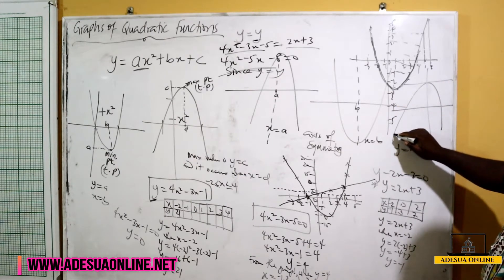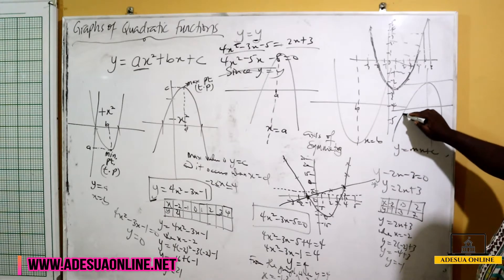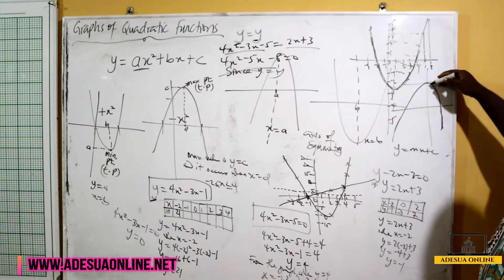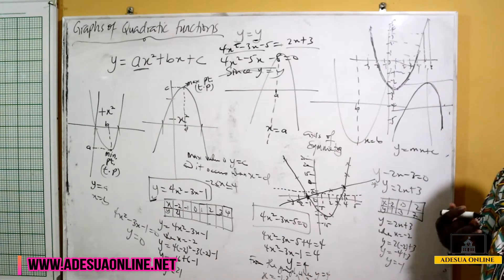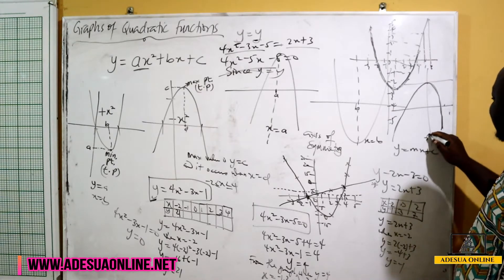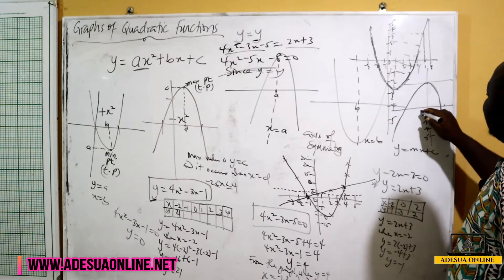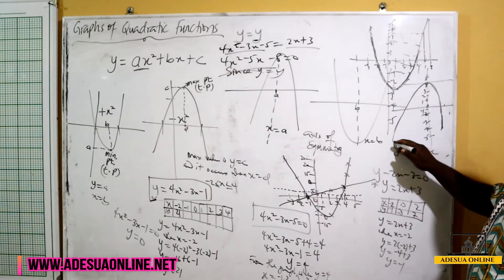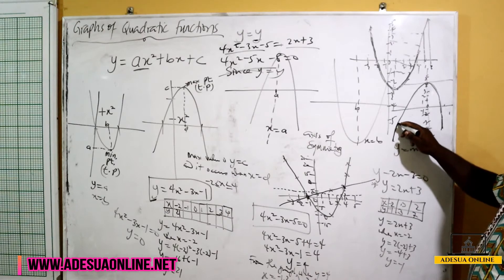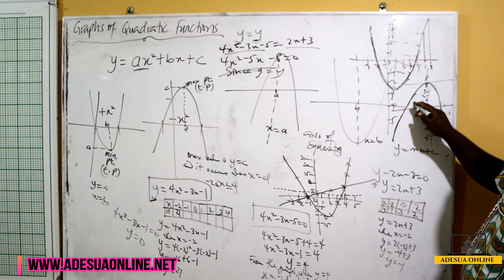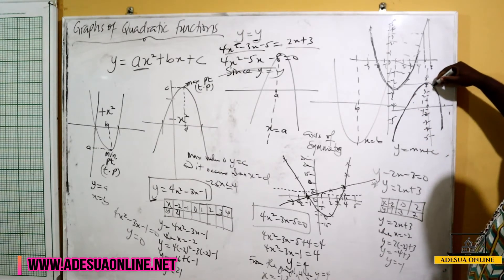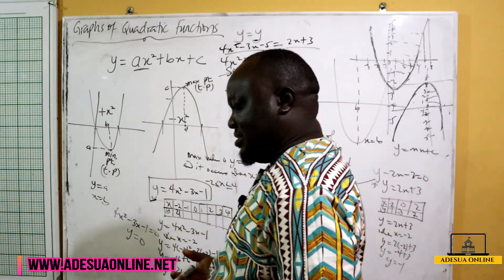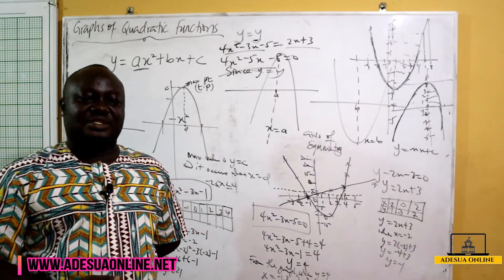For a maximum curve, as x increases from negative values toward the peak, y is also increasing. Past the maximum, x continues increasing but y starts decreasing. Understanding these trends — where x increases while y decreases, or both increase together — is important for answering questions on quadratic functions. Now let's solve a question.